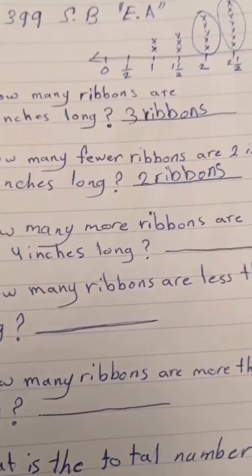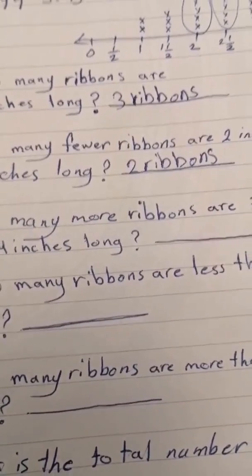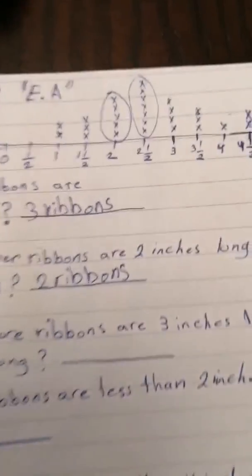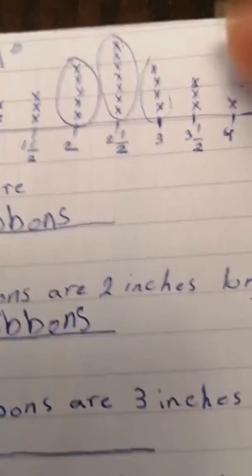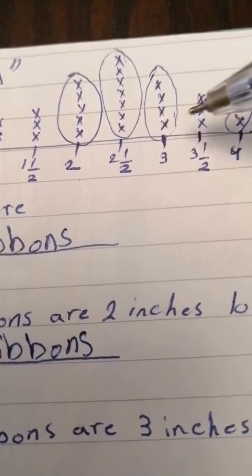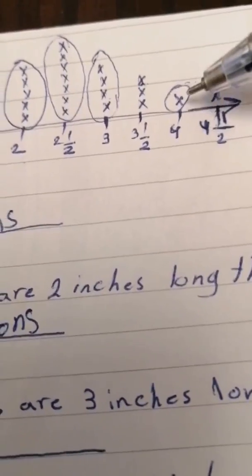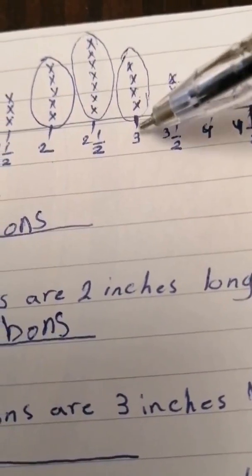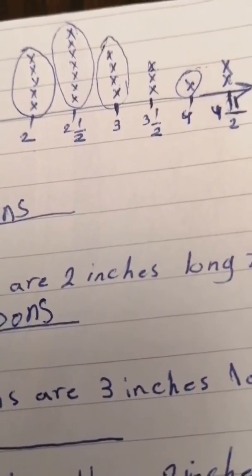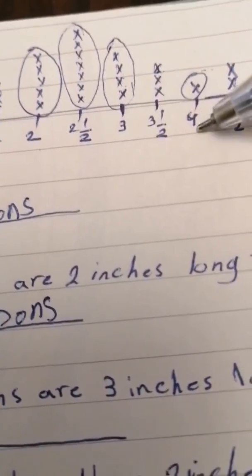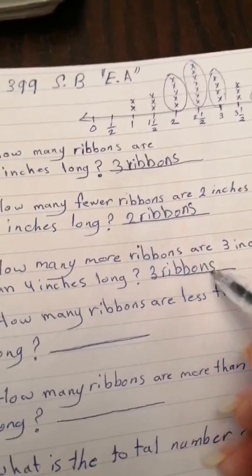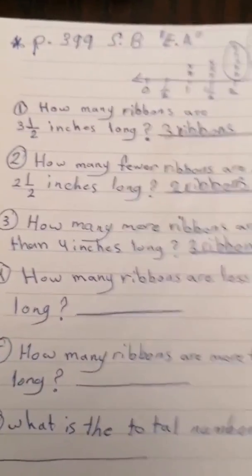Question three: how many more repons are three inches long than four inches long? Go to three inches — count: one, two, three, four — that's four repons. Go to four inches — one repon. How many more with three inches than four inches? Four minus one equals three. The answer is three repons.